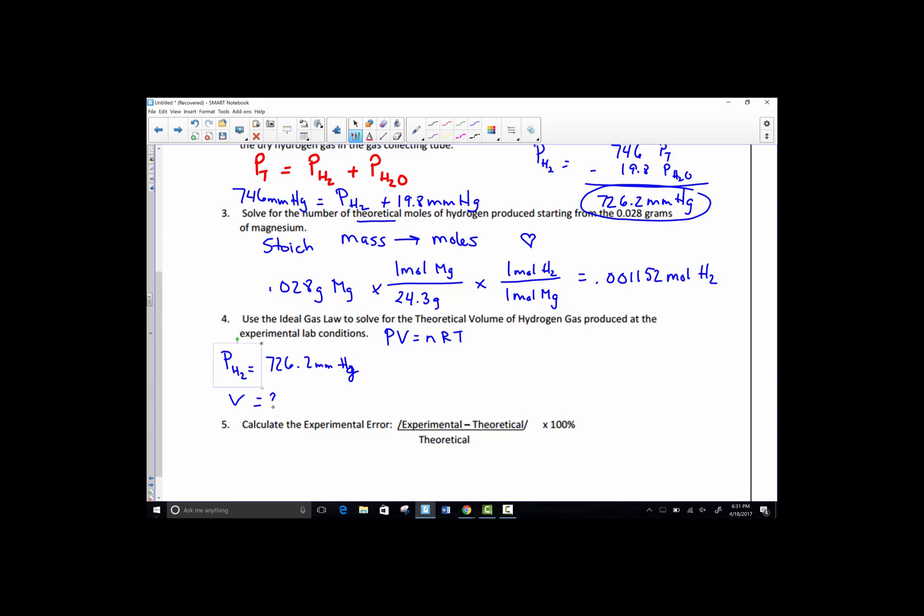Volume is our target variable. N was just solved for. Well, let's put these in. Here's our pressure. Volume is what we're looking for, and that will come out in a liter unit. N stands for the number of moles of hydrogen, which we just solved for here, 0.001152.